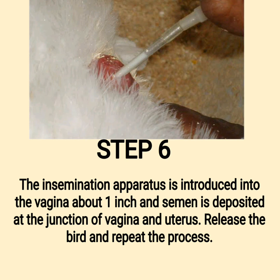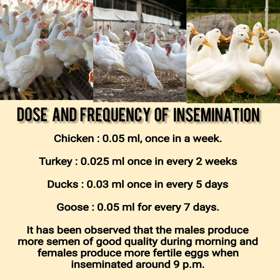Step 6: The insemination apparatus is introduced into the vagina about 1 inch and semen is deposited at the junction of the vagina and uterus. Release the bird and repeat the process. Recommended volumes and intervals: Chicken — 0.05 milliliters once per week; Turkey — 0.025 milliliters once every 2 weeks; Ducks — 0.03 milliliters once every 5 days; Goose — 0.05 milliliters every 7 days. It has been observed that males produce more semen of good quality in the morning and females produce more fertile eggs when inseminated around 9 p.m.